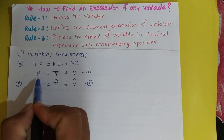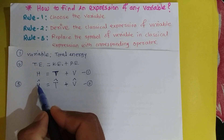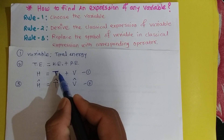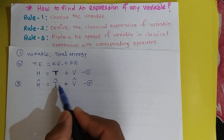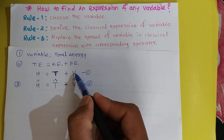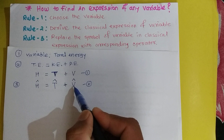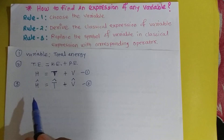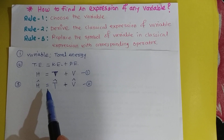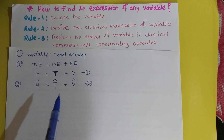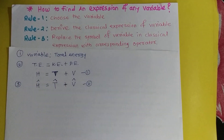So, if the overhead cap is absent, it is a variable; if the cap is present, it is an operator. H is the total energy variable, Ĥ is the total energy operator. T is the kinetic energy variable, T̂ is the kinetic energy operator. V is the potential energy variable, and V̂ is the potential energy operator. In this way, you can derive an expression of any variable in quantum mechanics by following rule one, rule two, and rule three.